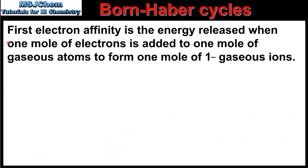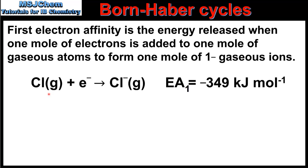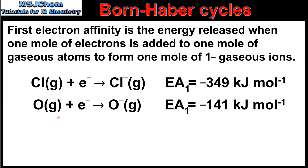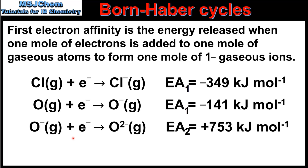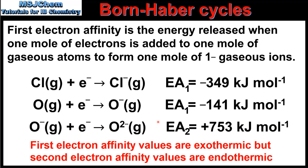Finally, we have the first electron affinity, which is the energy released when one mole of electrons is added to one mole of gaseous atoms to form one mole of 1− gaseous ions. Here we have the first electron affinity of chlorine — one mole of gaseous chloride ions from one mole of gaseous chlorine atoms — and the first electron affinity of oxygen, giving one mole of gaseous 1− ions. Next we have the second electron affinity of oxygen, where one mole of gaseous 2− ions is formed from one mole of gaseous 1− ions. The electron affinities of chlorine and oxygen are negative (exothermic), but the second electron affinity of oxygen is positive (endothermic). For Born-Haber Cycles involving oxygen, both the first and second electron affinities must be used.